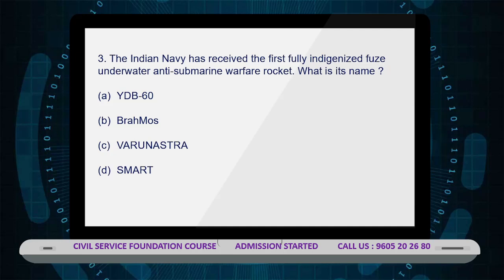The third question: The Indian Navy has received the first fully indigenized fused underwater anti-submarine warfare rocket. What is its name? Option A: YDB-60, Option B: BrahMos, Option C: Varunastra, Option D: SMART. The correct answer is Option A — YDB-60.